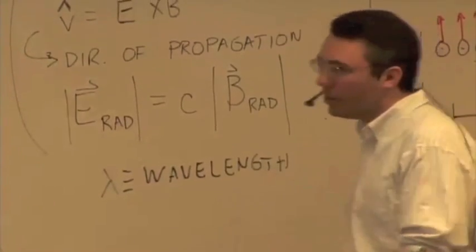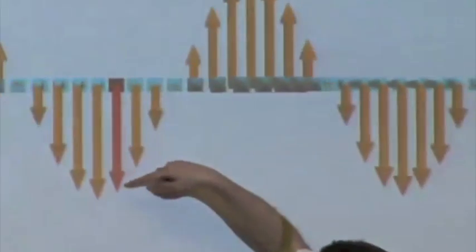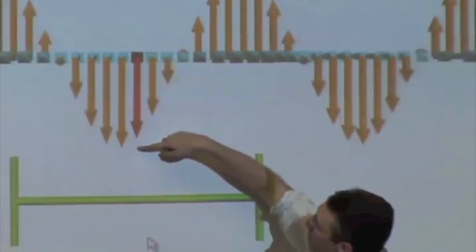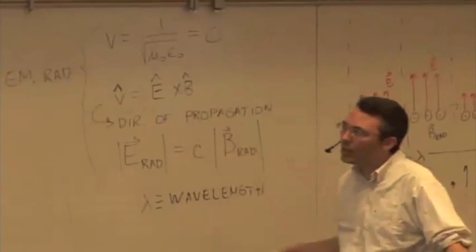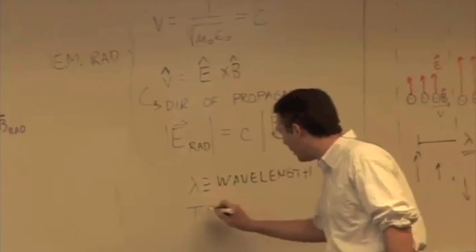If I were to clock the amount of time it takes for one of these observation locations to go from this minimum to a maximum, and then back to a minimum again, that total time is called the period. One over the period is frequency. The rate at which, that's the number of waves going by per second, right? So, T is the period.